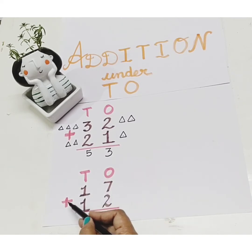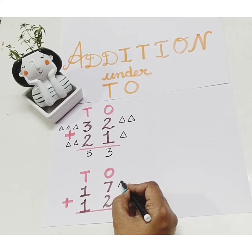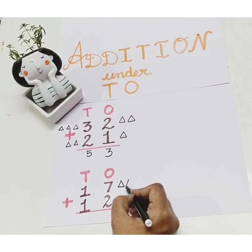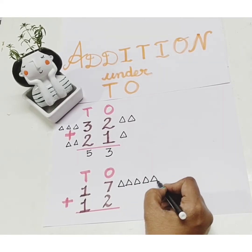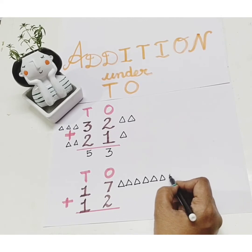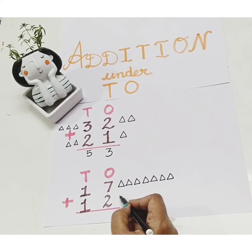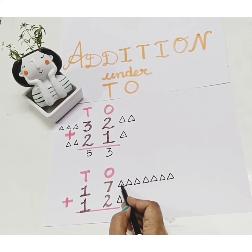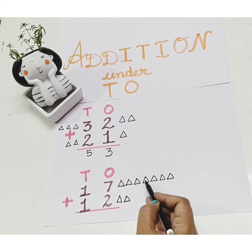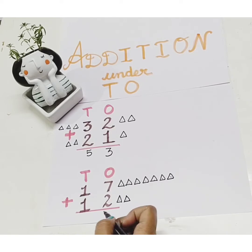Let's count 7 plus 2. Let's draw 7 triangles: one, two, three, four, five, six, seven. Then let's draw two triangles: one, two. How many triangles altogether? Let's count: one, two, three, four, five, six, seven, eight, nine. Let's write 9.